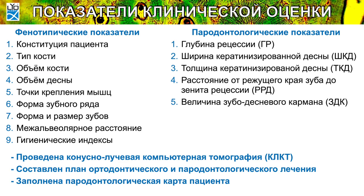Из пародонтологических клинических показателей мы учитываем глубину рецессии — это расстояние от ЦЭС до зенита рецессии, ширину кератинизированной десны, по сути объем прикрепленной кератинизированной десны, толщину кератинизированной десны путем зондирования, расстояние от режущего края зуба до зенита рецессии, потому что этот показатель стабильнее, чем показатель от ЦЭС, и линия ЦЭС может меняться в процессе лечения.